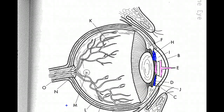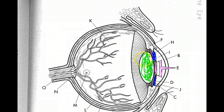The last part we've learned about so far, which I'm going to color in green, is the lens. The lens is the circular area located immediately behind the pupil. So far we've learned three different parts of the eye: the pupil, the iris, and the lens.